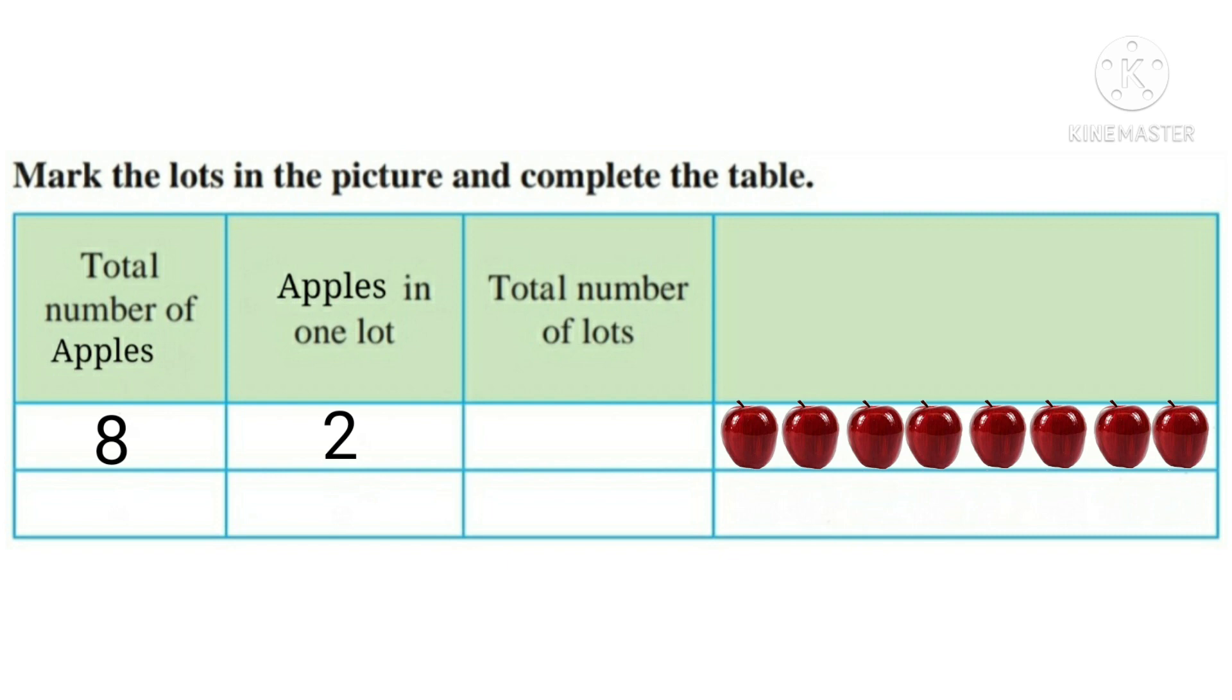So this is the first lot of 2 apples, this is the second lot of 2 apples, this is the third lot of 2 apples, and this is the fourth lot of 2 apples. As you can see students, there are 2 apples in each lot. Now tell me how many lots are formed. Very good, 4.